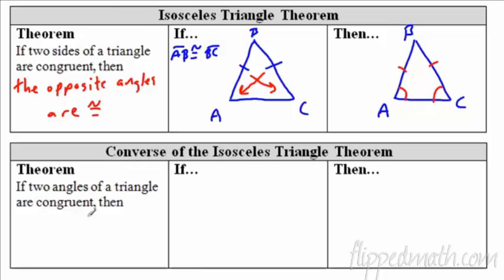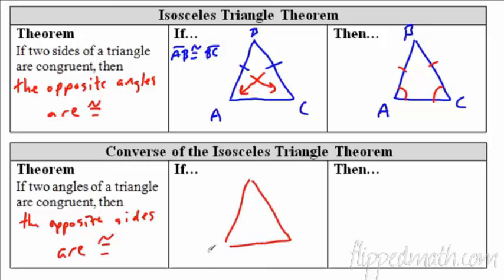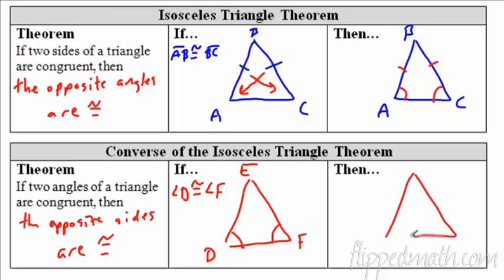How about the other way around — the converse? If two angles of a triangle are congruent, then the opposite sides are congruent. So let's call this triangle DEF. If angle D is congruent to angle F, then the opposite sides must be congruent as well. It's the same thing backwards — the converse. We're just switching the definition around, like we did in chapter two. Either way: if you see two angles marked congruent, mark the opposite sides congruent; if you see two sides marked congruent, mark the opposite angles congruent.